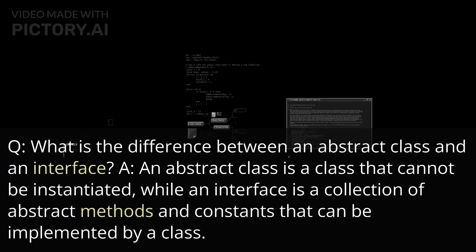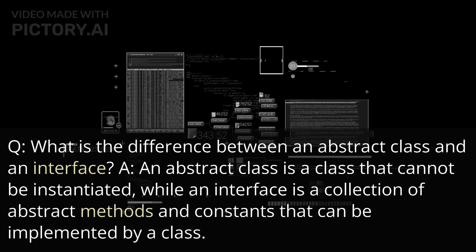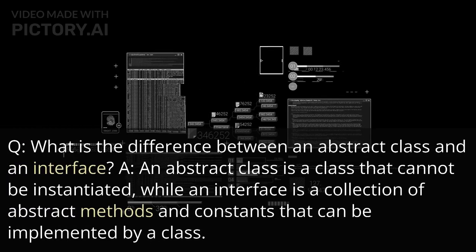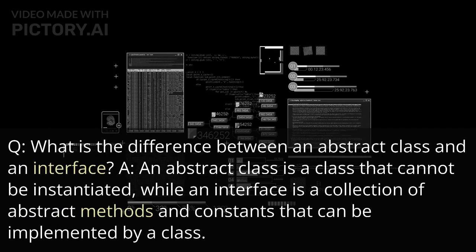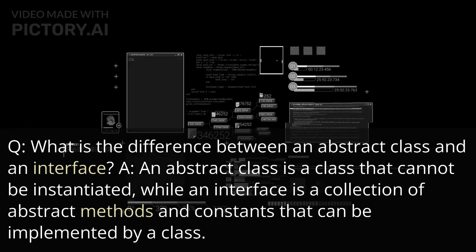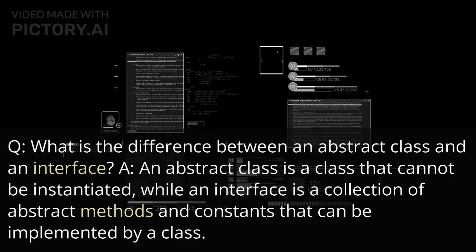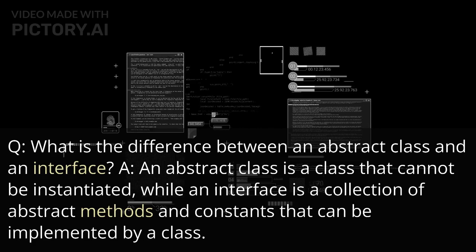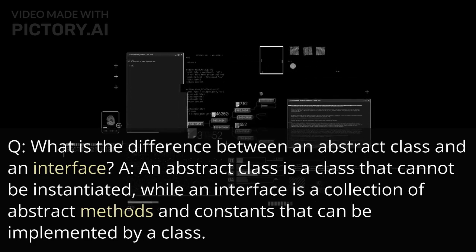What is the difference between an abstract class and an interface? An abstract class is a class that cannot be instantiated, while an interface is a collection of abstract methods and constants that can be implemented by a class.